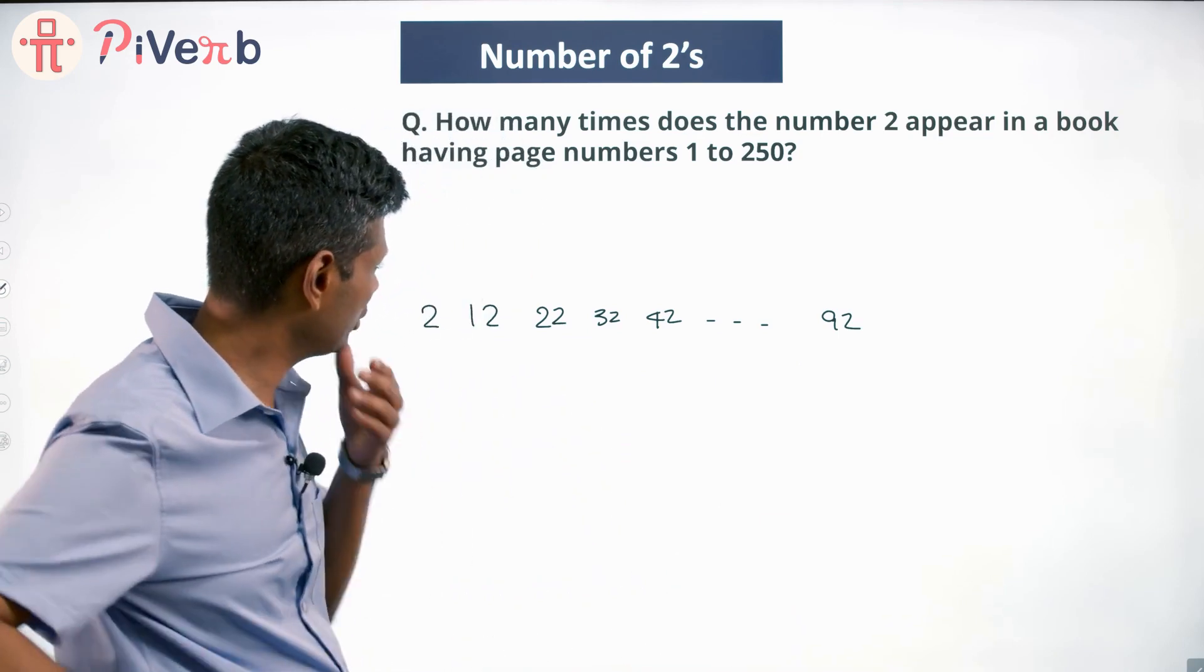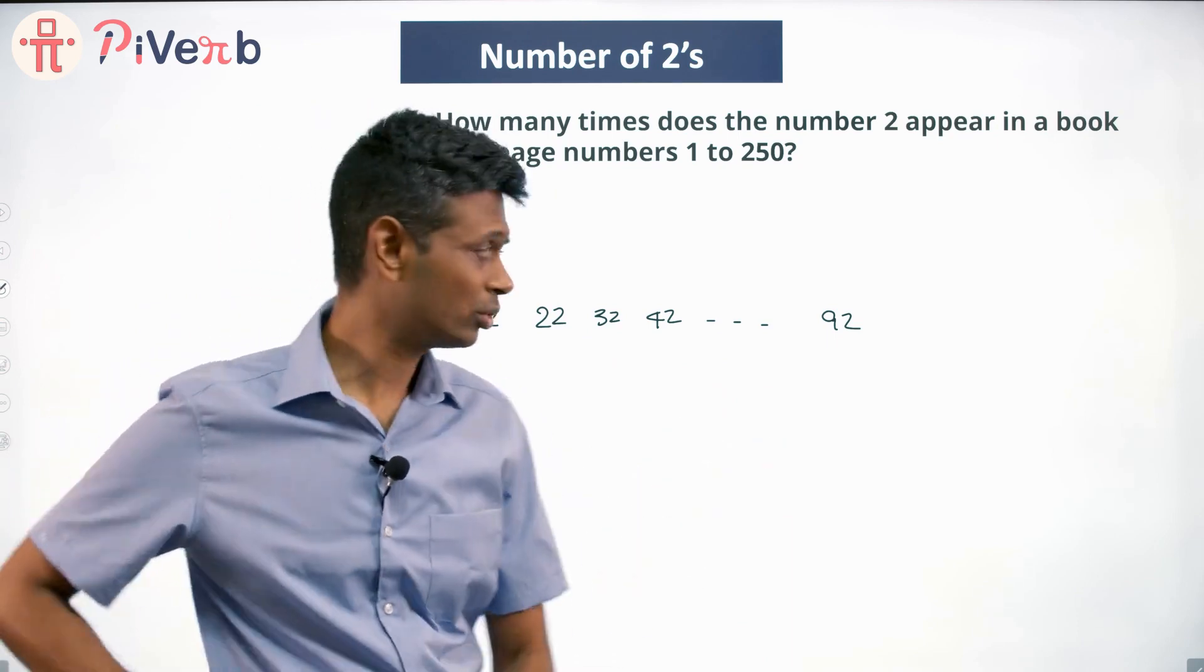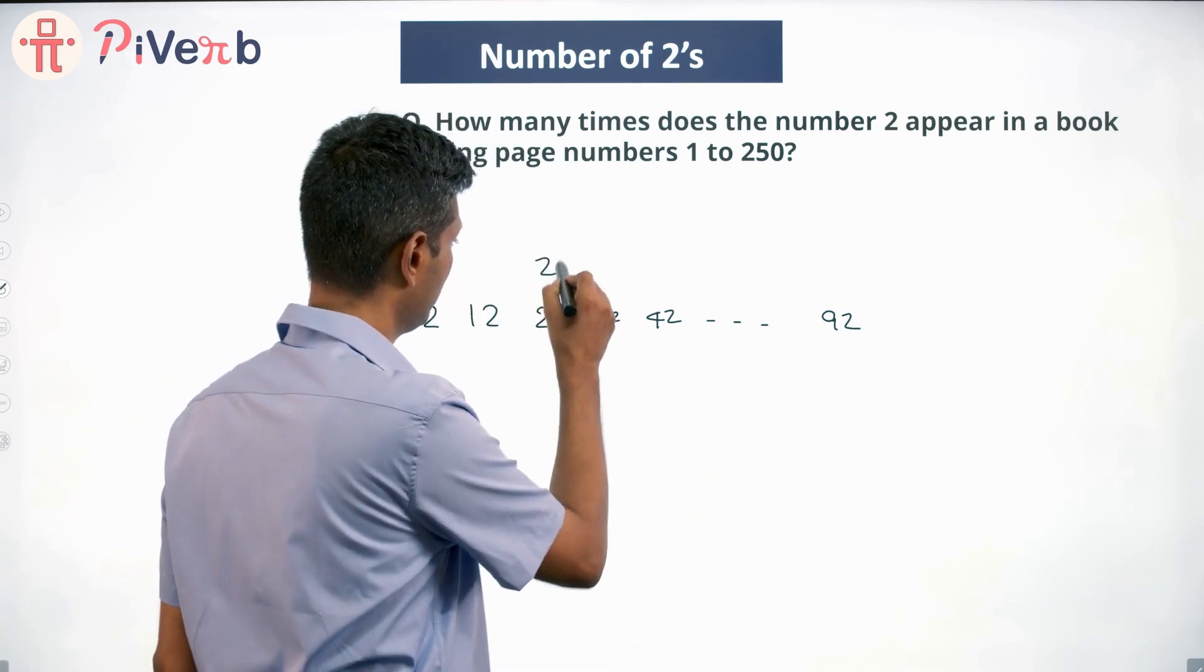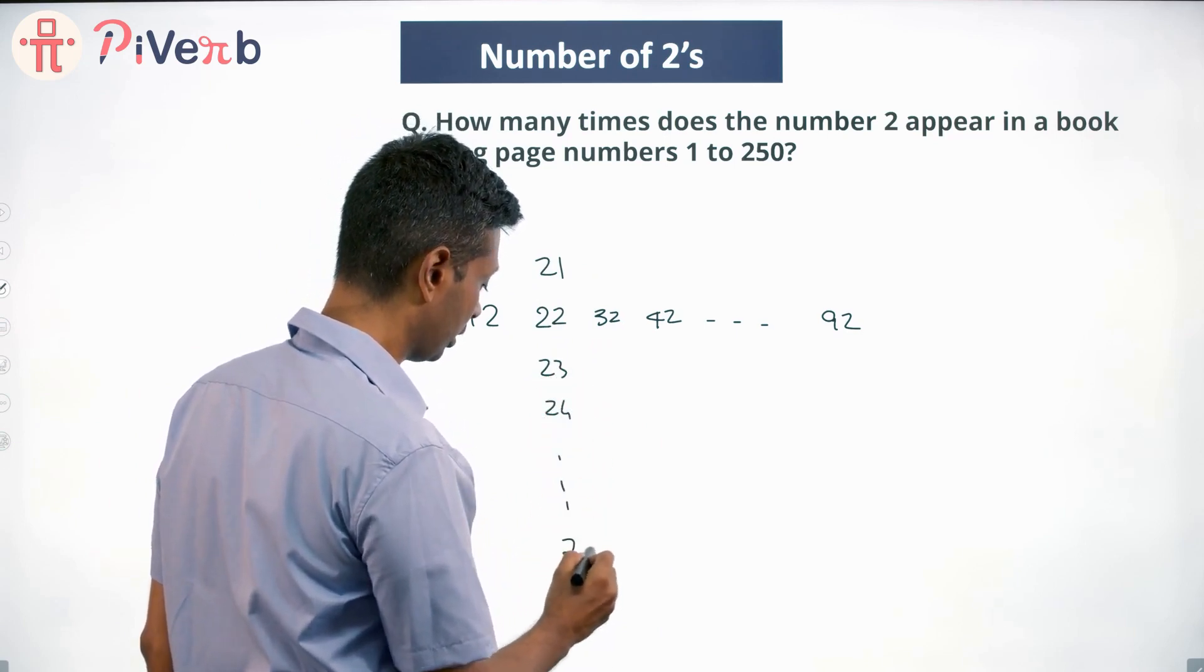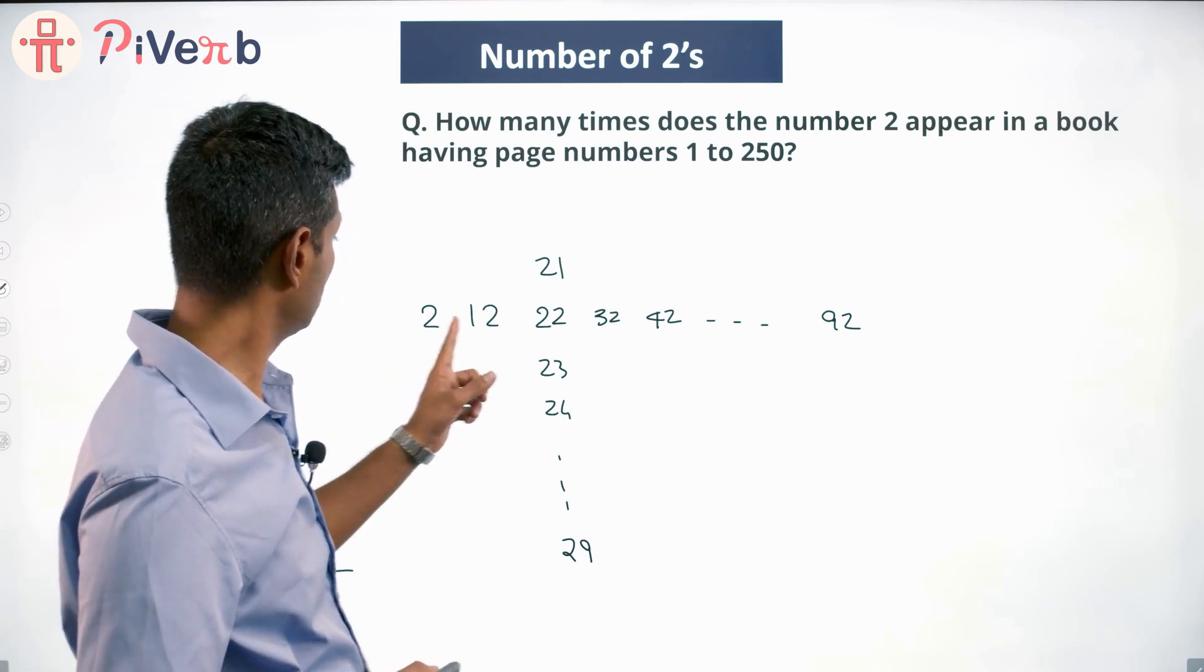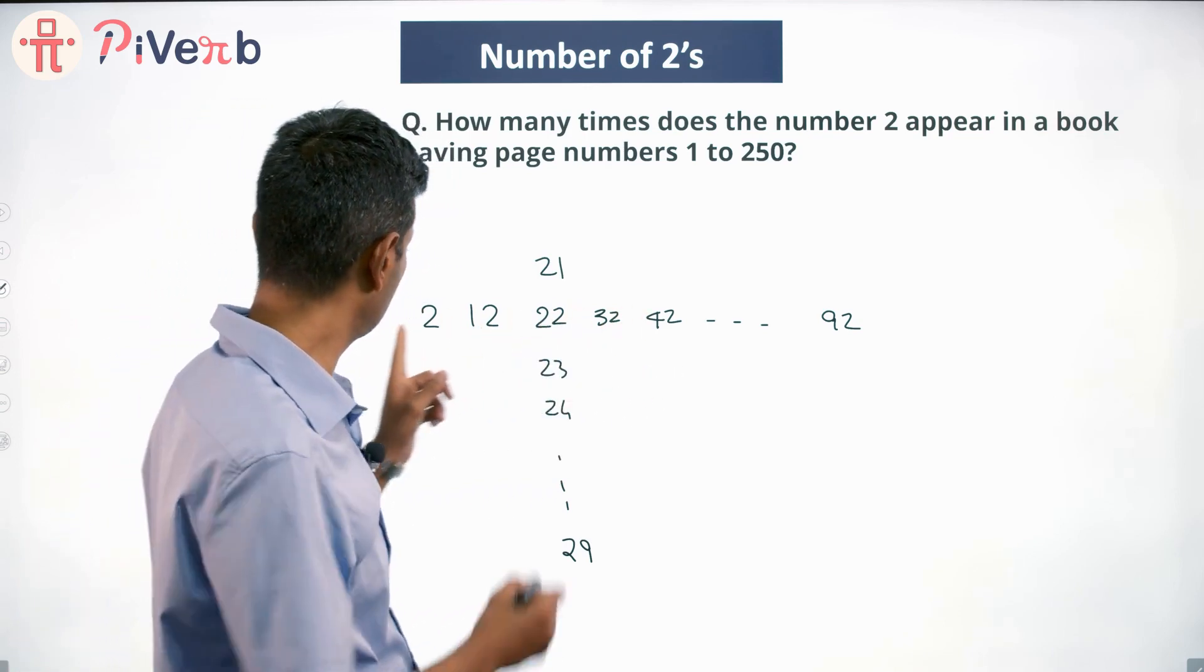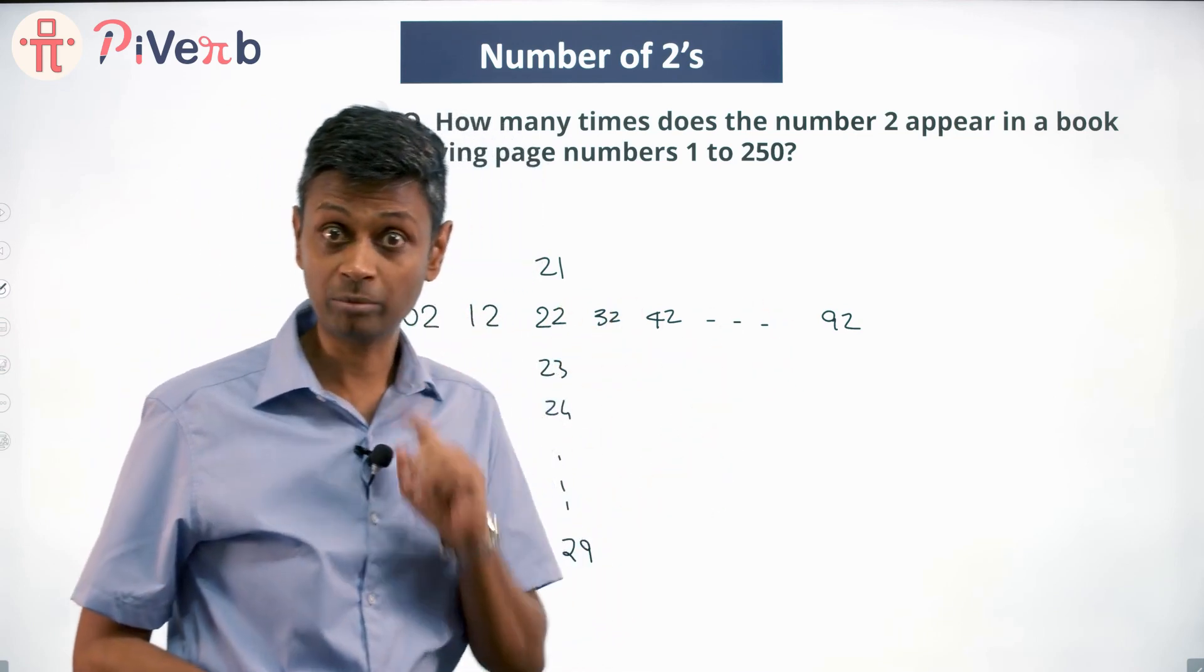Where else might we have a 2? In units place it has worked. It will come in 21, 22, 23, 24. Let's write that down - 21, 22, 23, 24, all the way till 29. So I'm going to write it as 02, 12, 22, 32, 42 till 92, ten times.